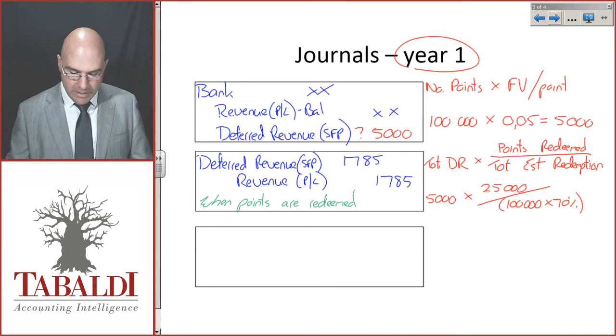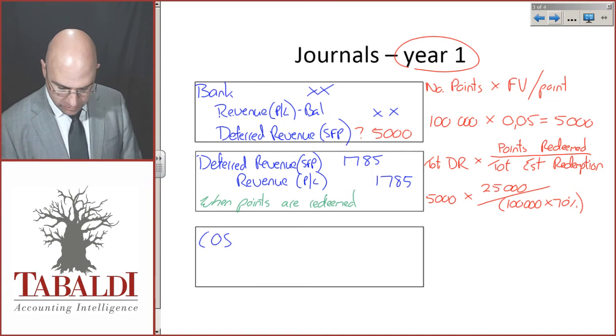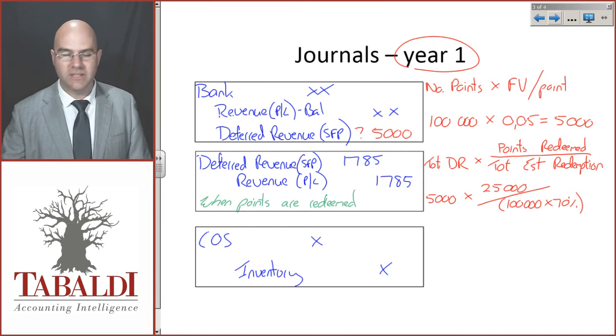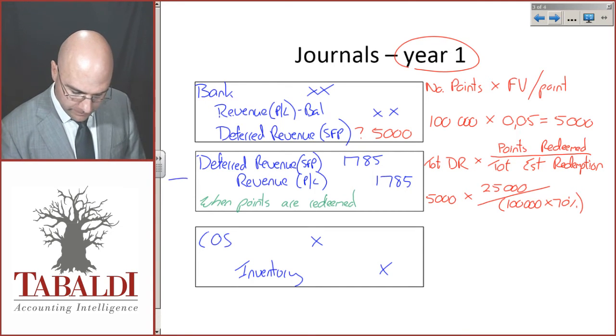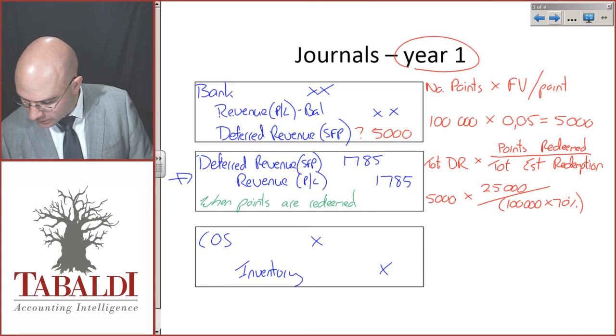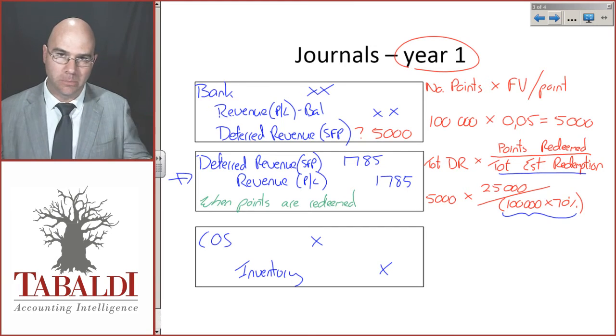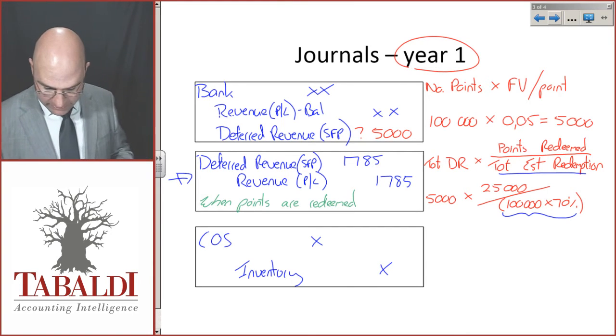Now, at the same time, remember you're going to have a related cost of sales. Let's assume we're selling our own goods—it will therefore come out of inventory. The trick I'm trying to show you is that we're using the total estimated redemption, not the actual 100,000 total points to pro rata it.